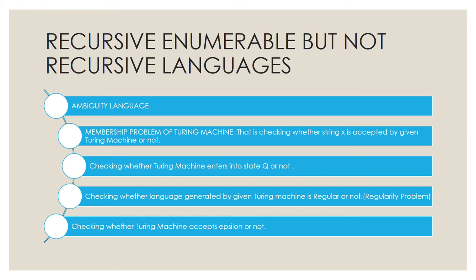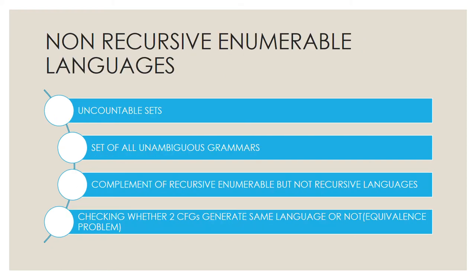The fourth example is checking whether the language generated by a given Turing machine is regular or not — the regularity problem — which is RE but not recursive. The fifth example is checking whether a Turing machine accepts epsilon or not, which is also RE but not recursive.